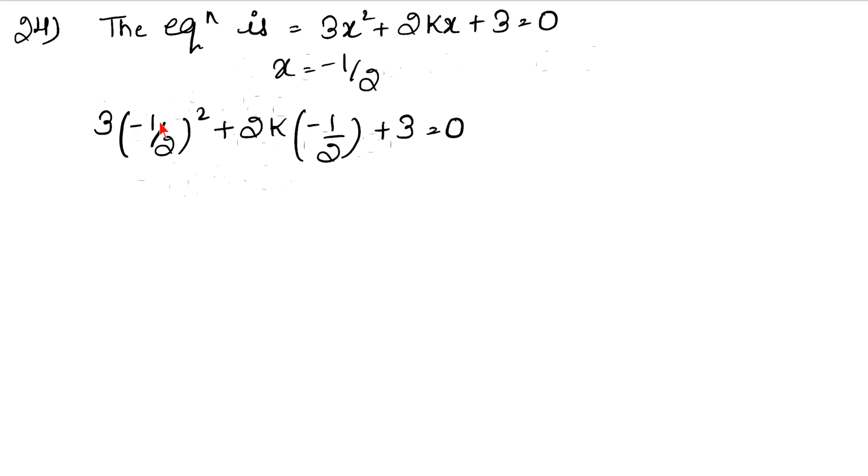Look, minus minus plus, 1 square is 1, 2 square is 4, 3 into 1 upon 4 plus 2k. 2 is the root and then cancel. So 3 upon 4 plus k into minus 1 plus 3 equals to 0. So 3 upon 4 minus k plus 3 equals to 0.